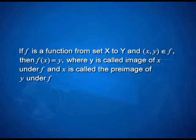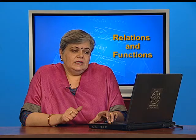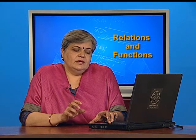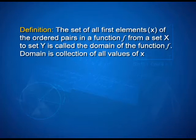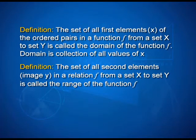If f is a function from set X to Y and an ordered pair (x, y) belongs to f, then y is f(x) and y is the image of x under f. X is also called the preimage of y under f. Keeping in the language of f being a relation as a collection of ordered pairs, we define domain to be the set of all first elements of the ordered pairs in the function f from set X to set Y. That is, domain is the collection of all values of x, whereas range is the set of all second elements — the image, most often written as y, in a relation f from set X to set Y.